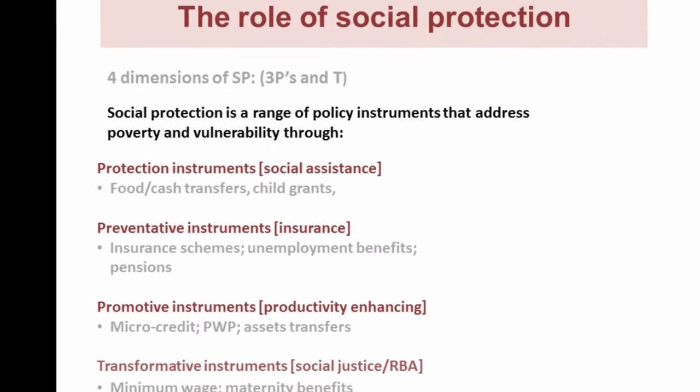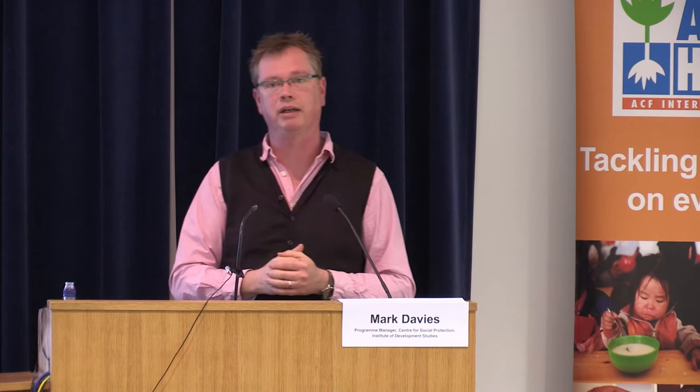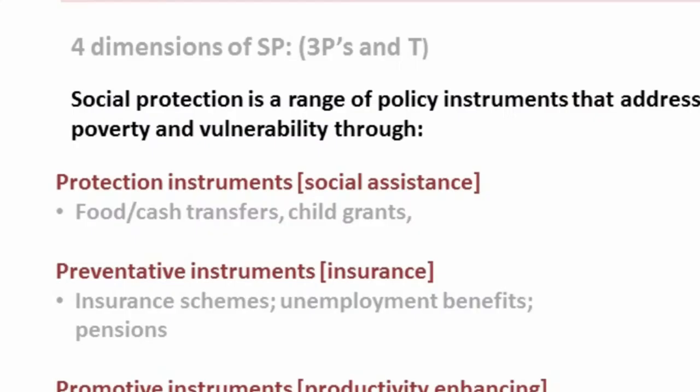The first category is social assistance. Social protection is called many different things — social assistance, social welfare — it's quite confusing. The classic examples are cash transfers, food transfers, and child grants. The objective here is protection: it's trying to protect the most vulnerable. This is really around poverty — this first set of objectives around social protection.